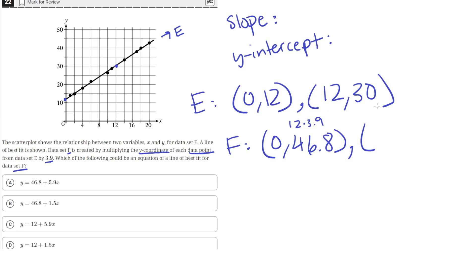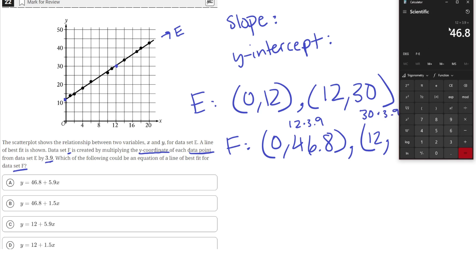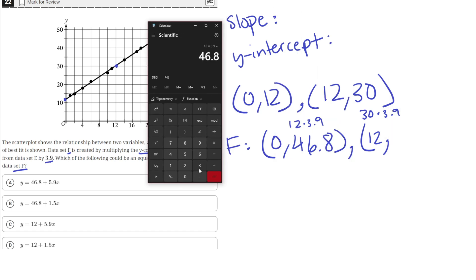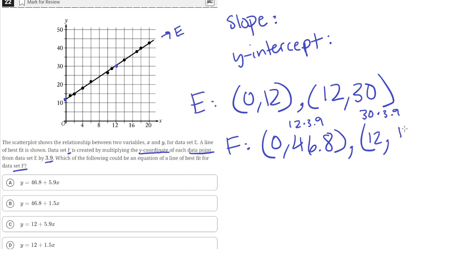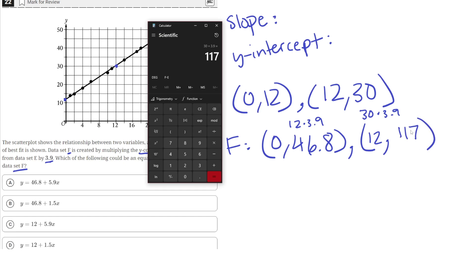And for the second point, X would stay the same, and Y would be 3.9 times higher. So, we would do 30 times 3.9. We put that into our calculator. 30 times 3.9 would get 117.